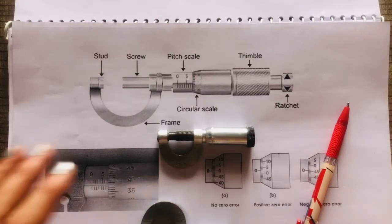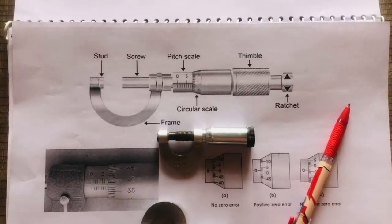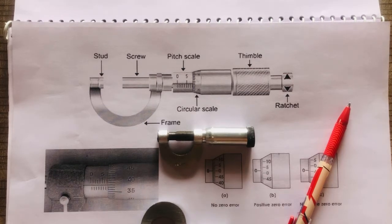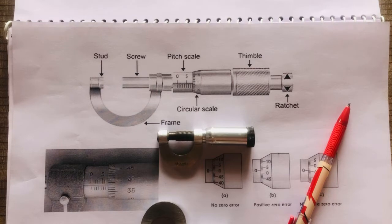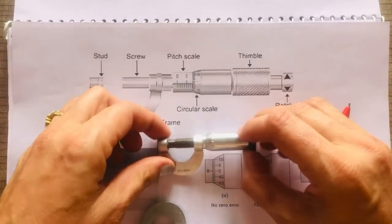Hello, dear students of Plus 1, Plus 2, BSc 1, 2, 3, and MSc. In the physics practical series, in the last lecture we covered the basics of vernier caliper — zero error, positive zero error, and negative zero error. Now in this lecture we will do the basics of the screw gauge.